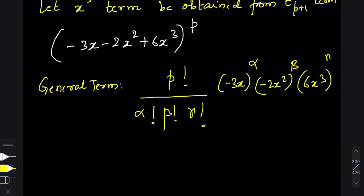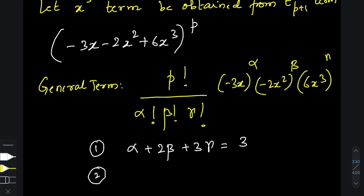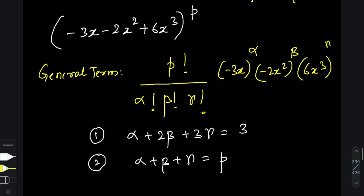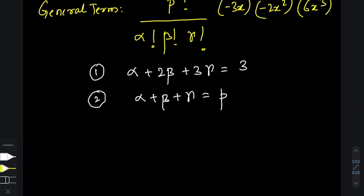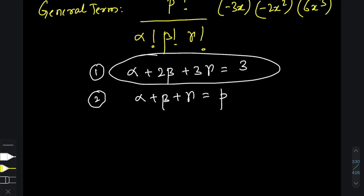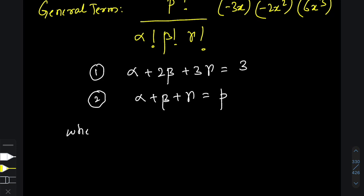From this general term, I can state two conditions. First, the powers of x — which are α, 2β, and 3γ — must add up to 3: so α + 2β + 3γ = 3. Second, α + β + γ = p. You can refer to my multinomial theorem discussion — link in the description — to learn more about this.